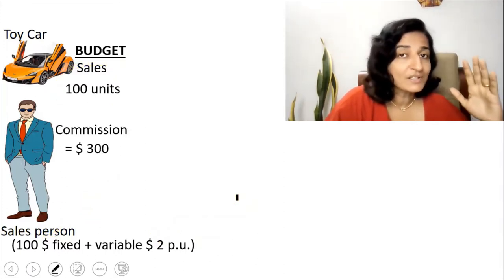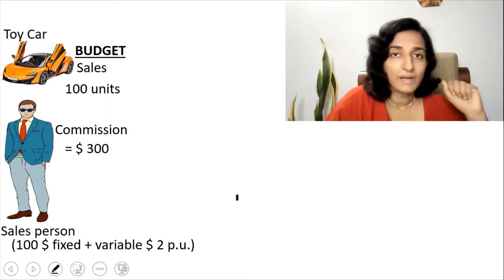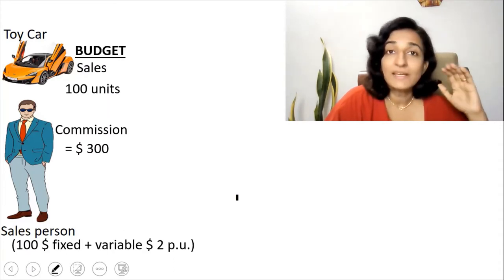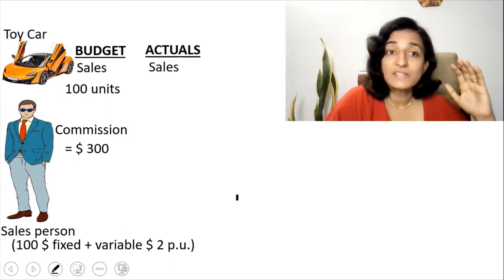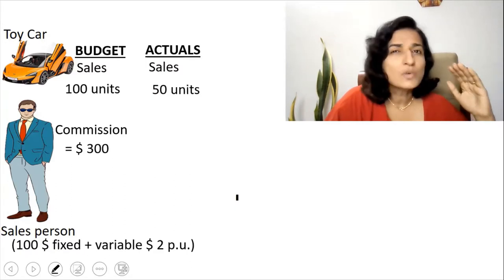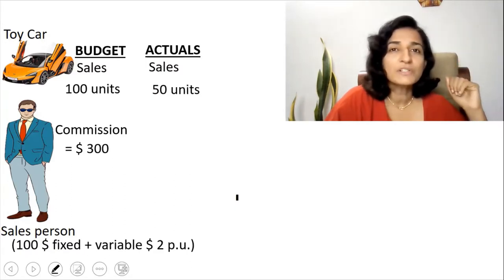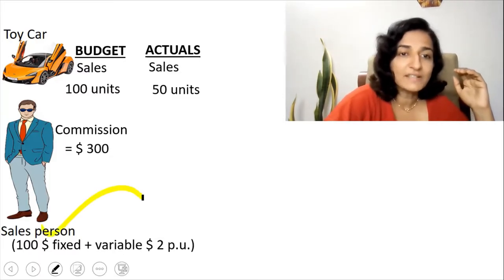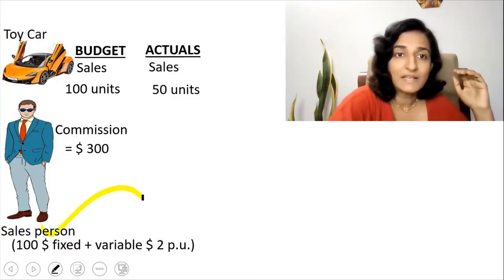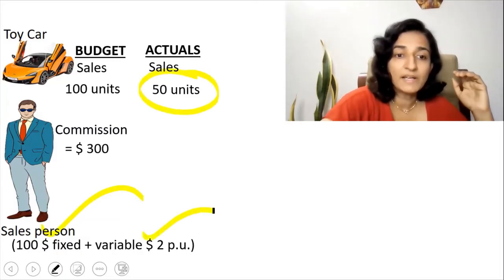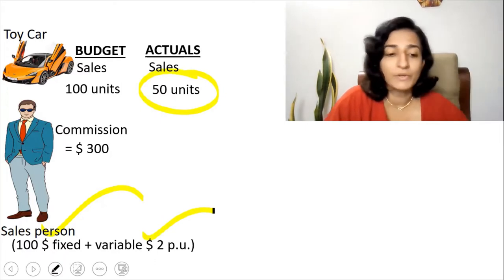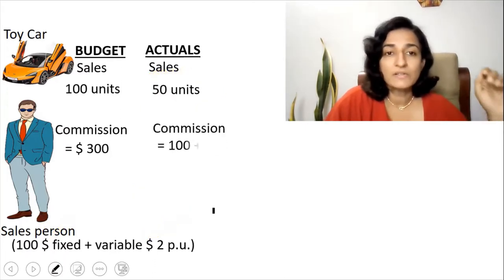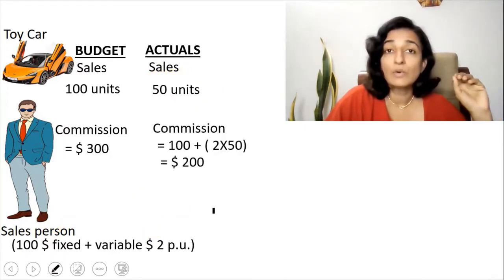That gives an amount of $300. This is the budget that you have prepared. Now suppose when the actual results come, the sales achieved is just 50 units. So what is the commission that you pay to the salesperson? It is $100 fixed plus 50 units multiplied by $2 per unit, so it is an amount of $200.